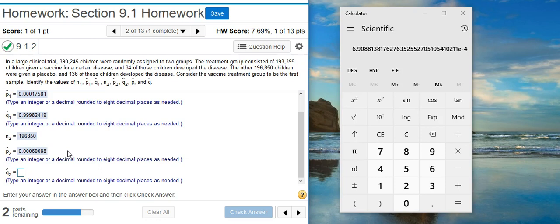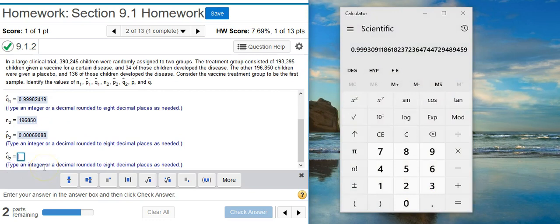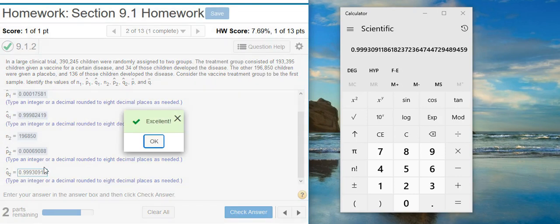Now, we're looking for Q-hat 2, which of course is going to be the complement of P-hat 2. So, again, I'm just going to make this number, which is P-hat 2, make that negative, add it to 1. And then, boom, there's my Q-hat 2. Excellent!